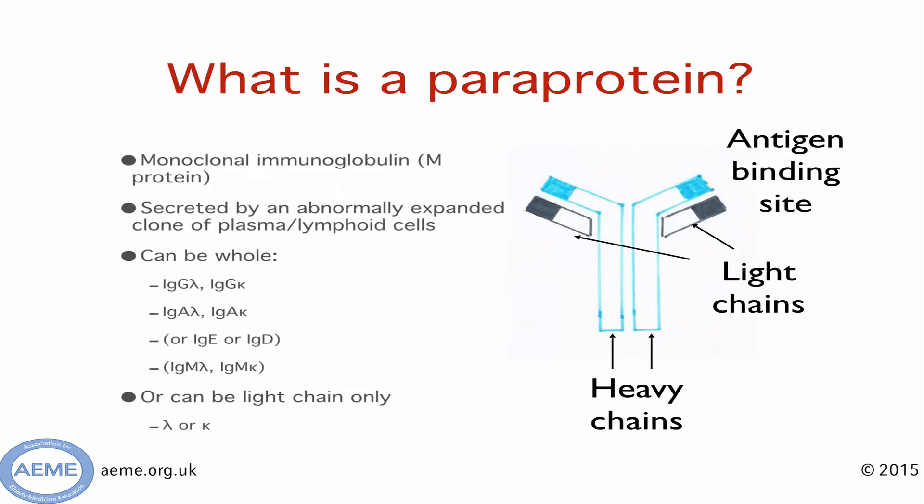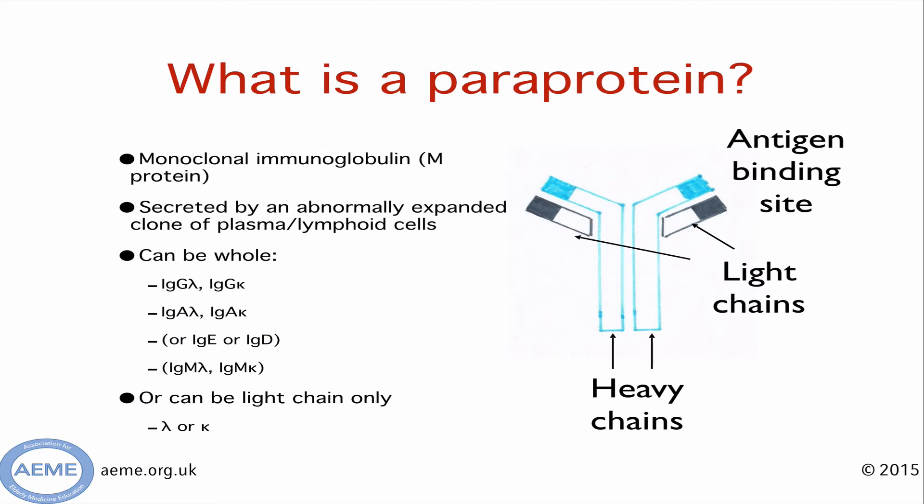Firstly, back to some of the basics. A monoclonal protein — also called an M protein or a paraprotein — is an immunoglobulin secreted by an abnormally expanded clone of plasma or lymphoid cells. This abnormal clone produces an immunoglobulin of one size only. These immunoglobulins can consist of light and heavy chains, or light chains only. When they include heavy and light chains, they are normally IgG kappa or lambda, or IgA kappa or lambda. IgE, IgD, and IgM myelomas are extremely rare. It's important to note that if you find an IgM paraprotein, it is most likely related to lymphoma.